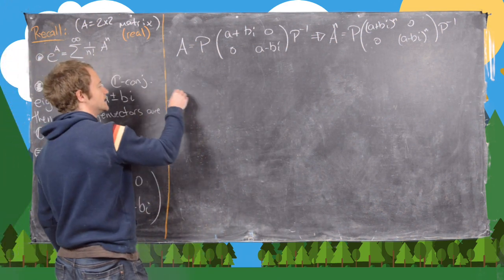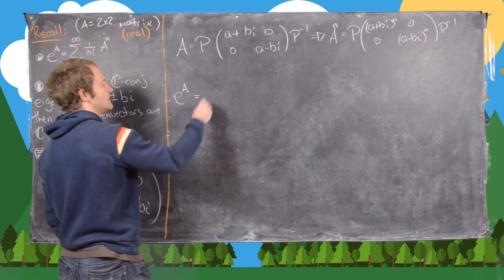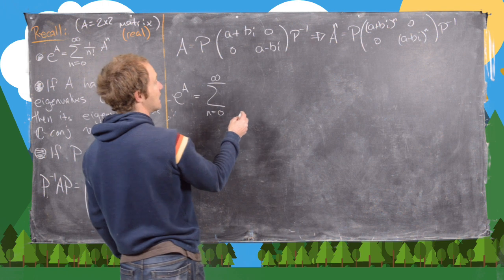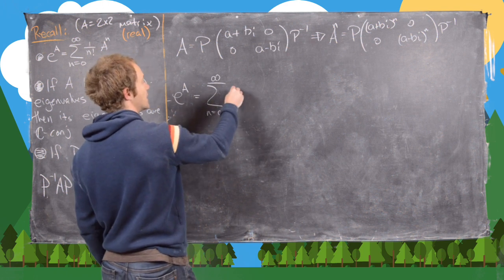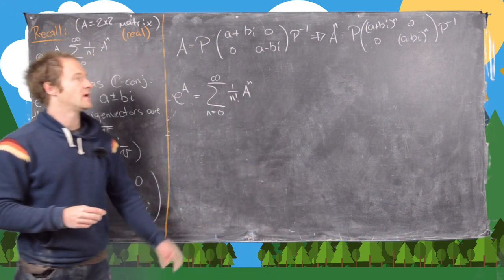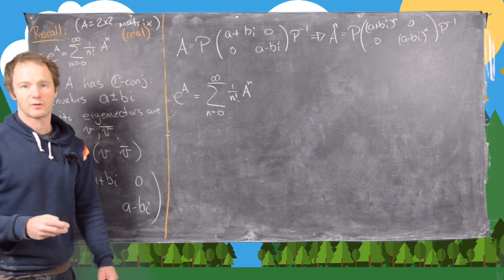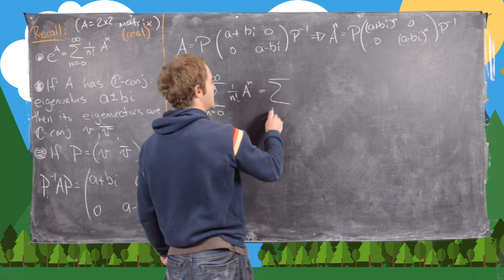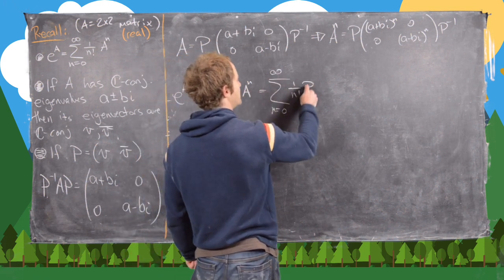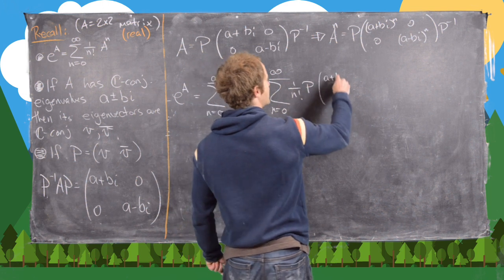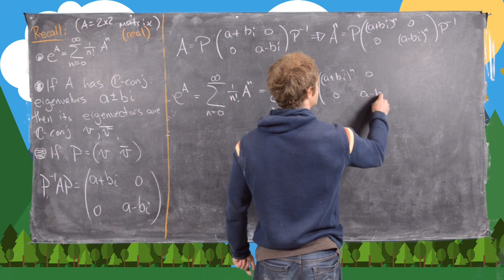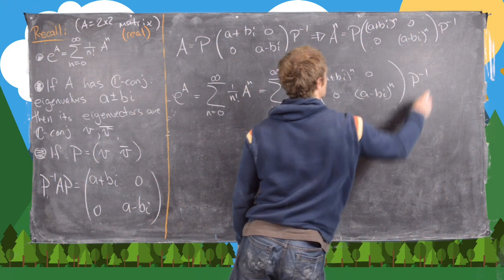Now we can calculate e to the A. Notice that's going to be the sum from N equals zero to infinity of one over N factorial times A to the N. We'll replace A to the N with what we just wrote, so this is the sum from N equals zero to infinity of one over N factorial times P, then the diagonal matrix with (A plus Bi) to the N and (A minus Bi) to the N, times P inverse.